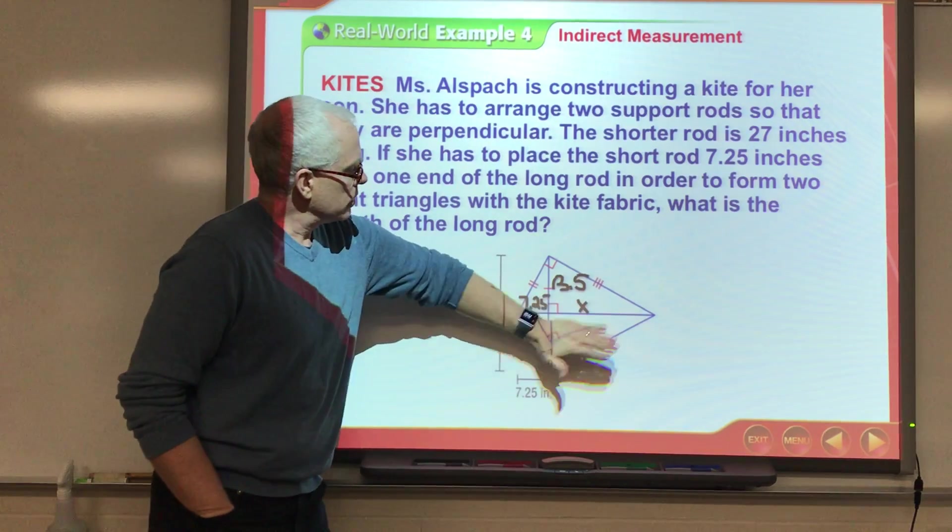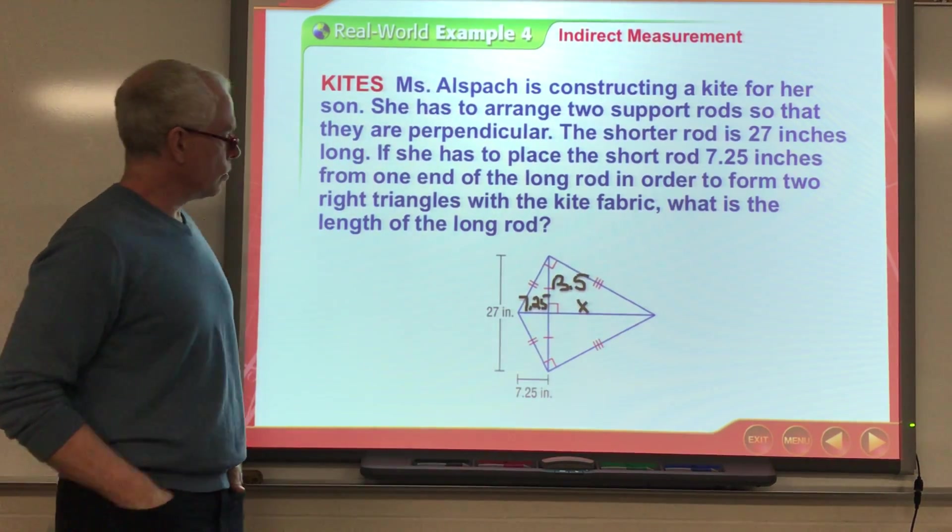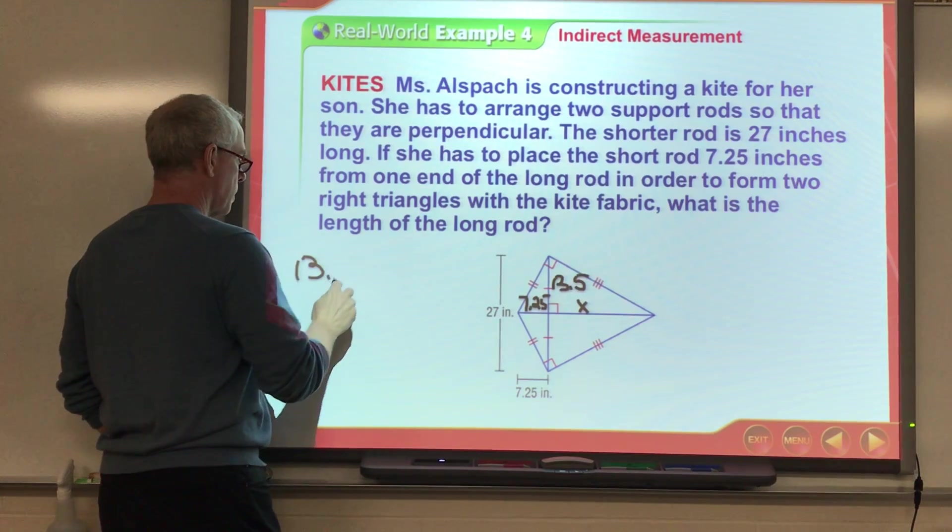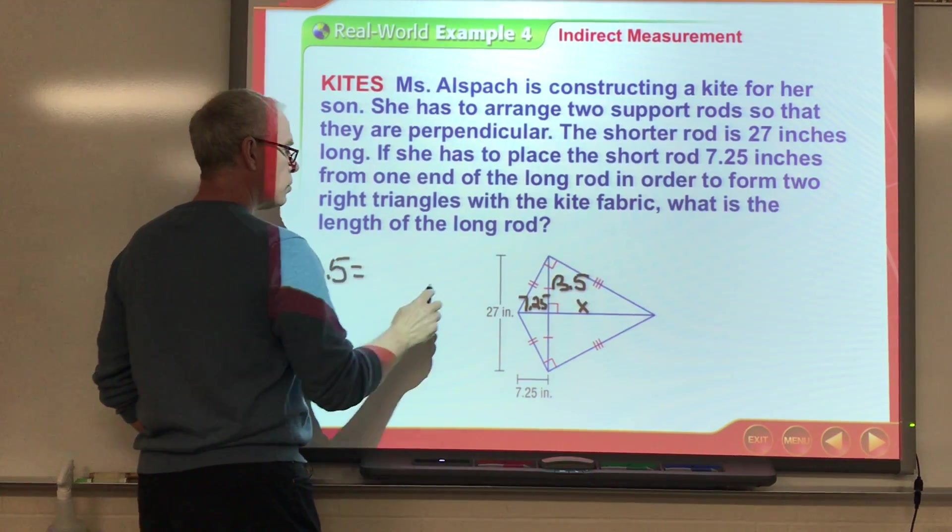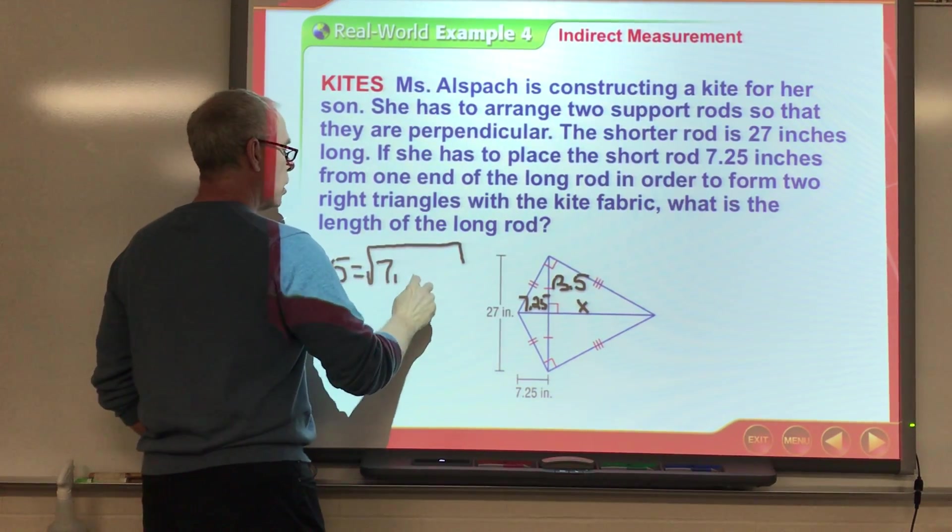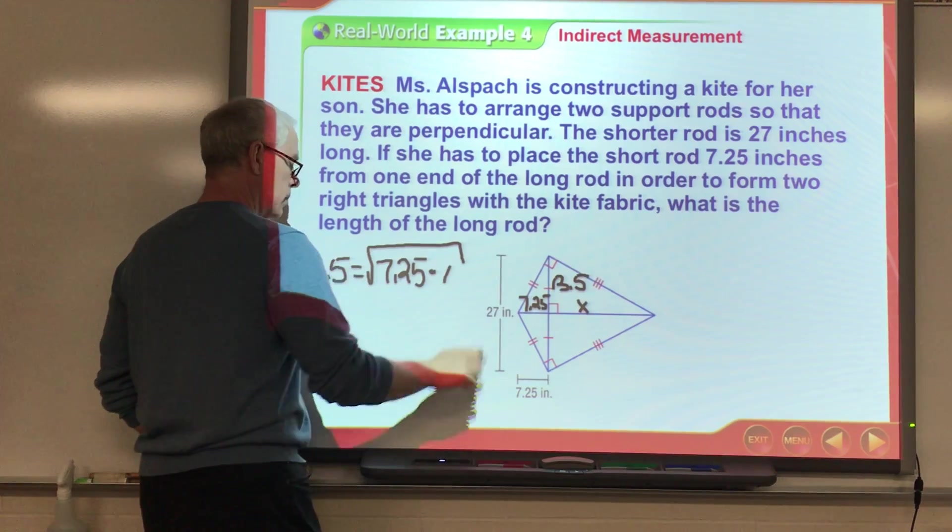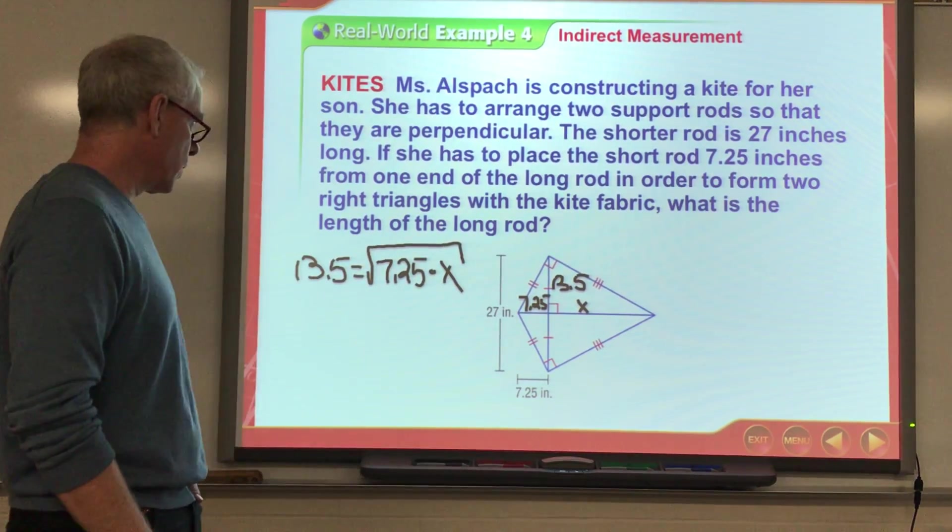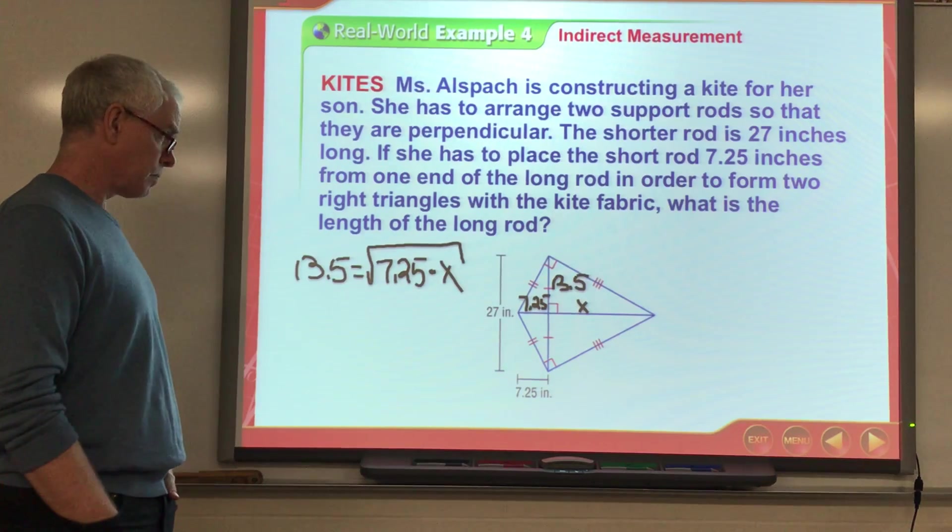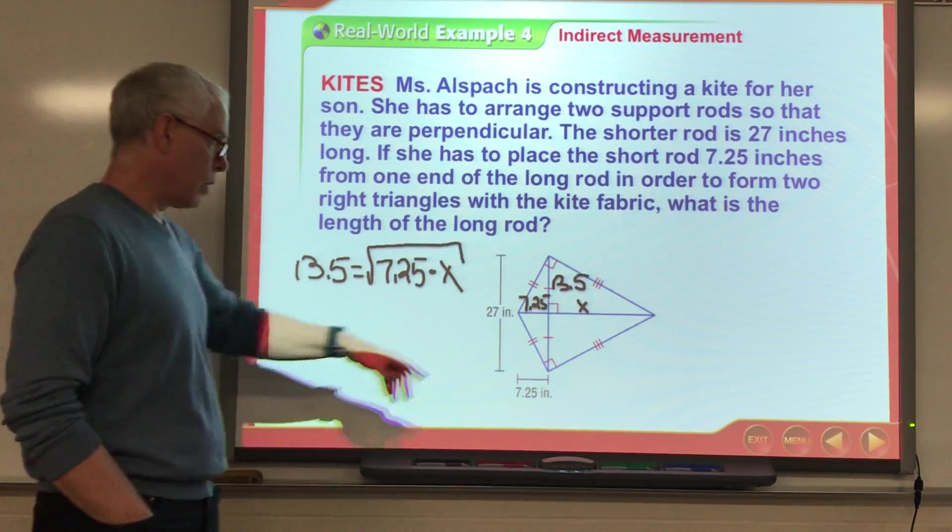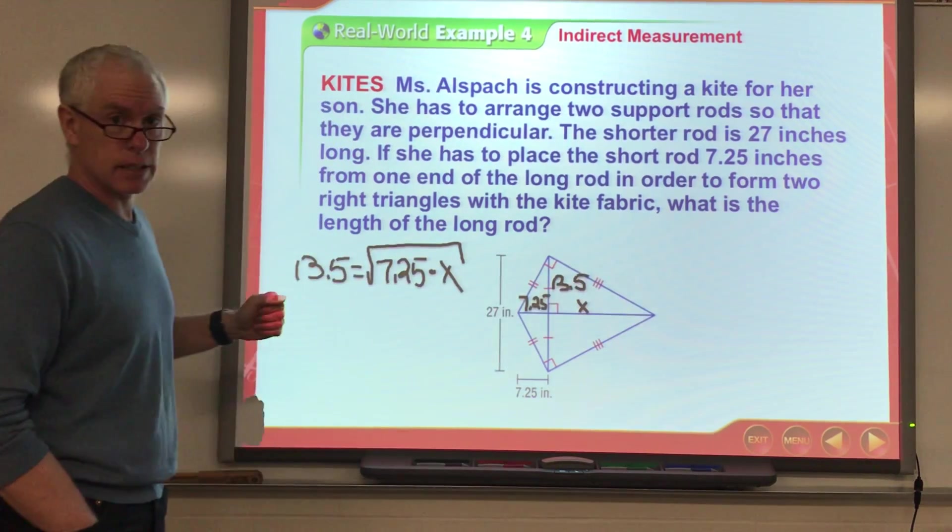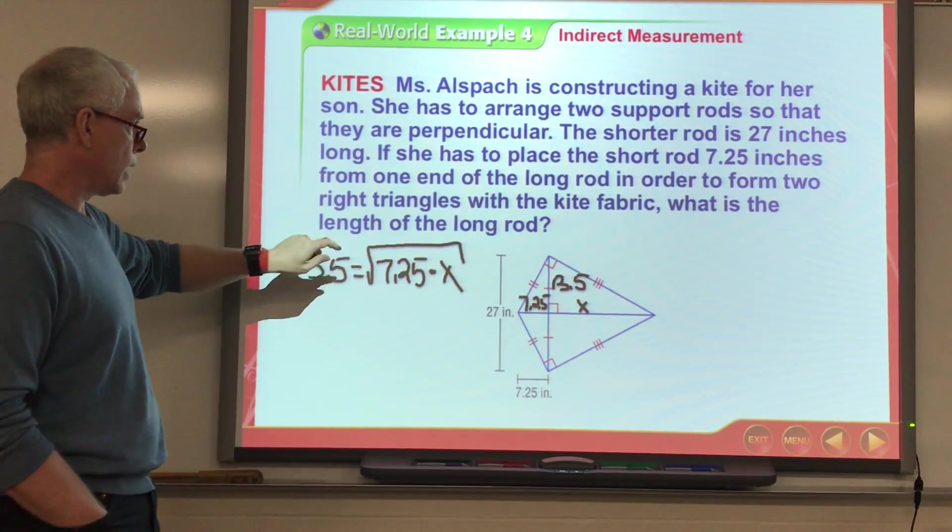Okay. I know this is 7.25 and I'm going to call that X. Okay. Well, if I just look at the top triangle, I've got that altitude, 13.5. And that is supposed to be the square root of the two parts of the hypotenuse. So, what we're going to see in the next slide is they're going to go through and they're going to solve that proportion. Well, once they do that, whatever they get for X, if we add 7.25 to it, we've got the entire length of that second rod. Okay. So, let's do that.